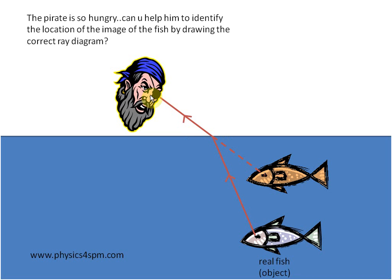If we recall the refraction phenomena, it is the bending of light as it moves from one medium to another medium due to a change in its speed. This is how you draw a correct ray diagram based on refraction phenomena. See you again in the next video.